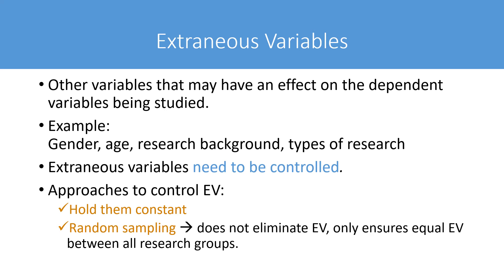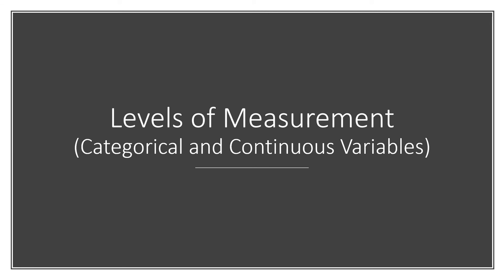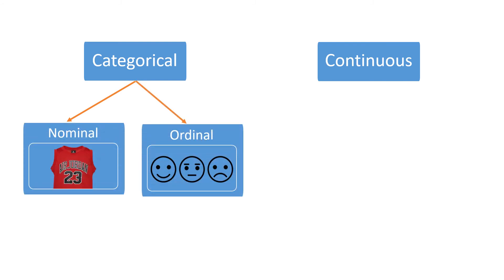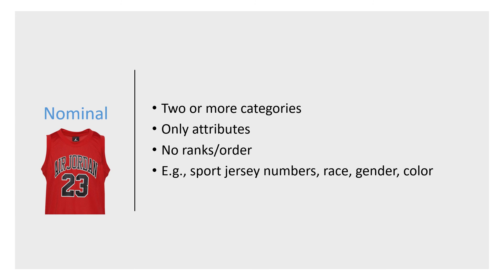The discussion of variables is not complete without discussing categorical and continuous variables, commonly known as levels of measurement. Research variables can be classified into categorical and continuous variables. Categorical variables can be further divided into nominal and ordinal variables, while continuous variables can be divided into interval and ratio variables.